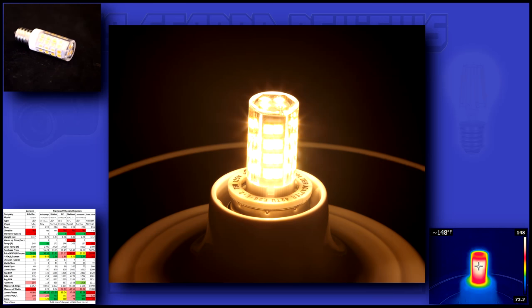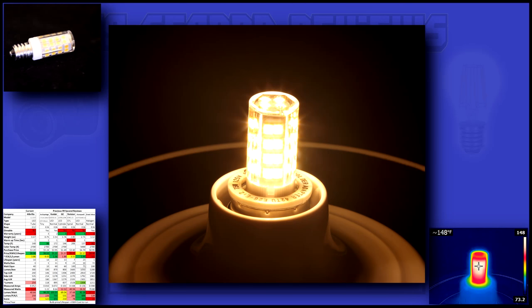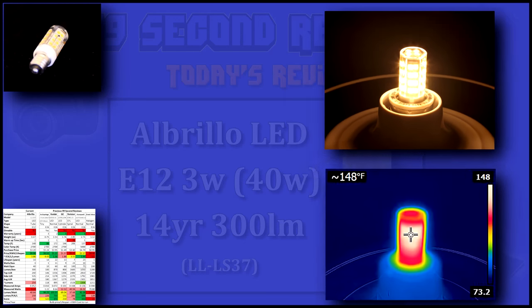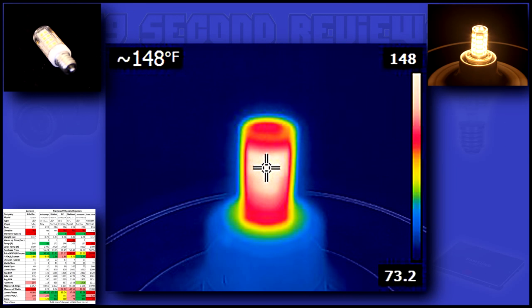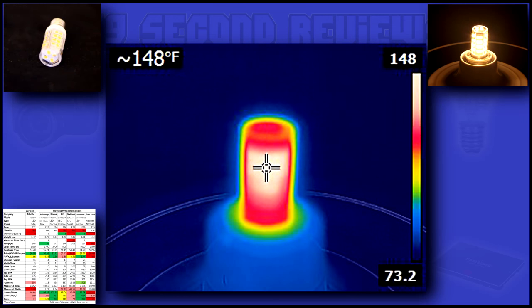The specs say 300 lumen, but it comes up nearly 50 lumen short in my testing. This bulb has a bit of a disadvantage in the heat measurement. Since the diodes are so close to the bulb housing, I am basically measuring the LED diodes themselves.